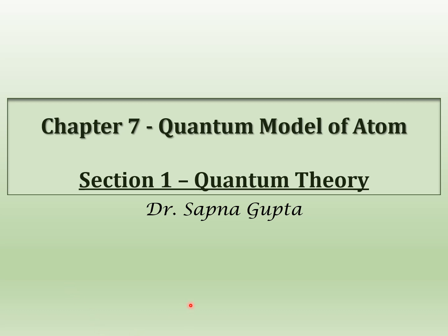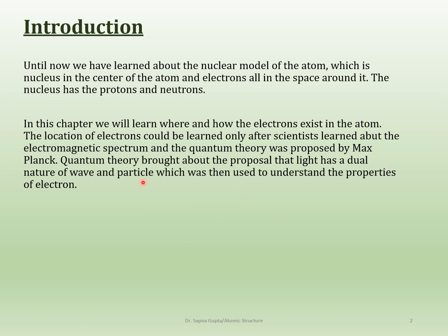Now we will get into what is called the quantum model of an atom, and for that you need to know a little bit about quantum theory. So until now what you know about the atom is the nuclear model — the nucleus is in the middle, electrons are all around and there's a lot of empty space — but here we are going to get a little bit deeper into where those electrons actually exist. To know that you need to understand the atom and physics a little bit more.